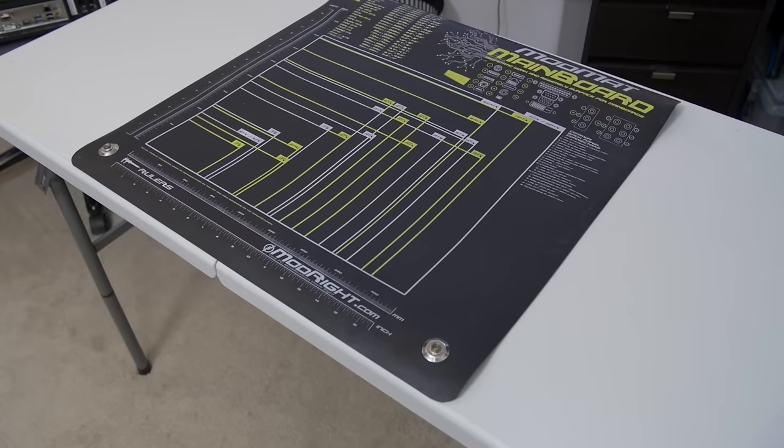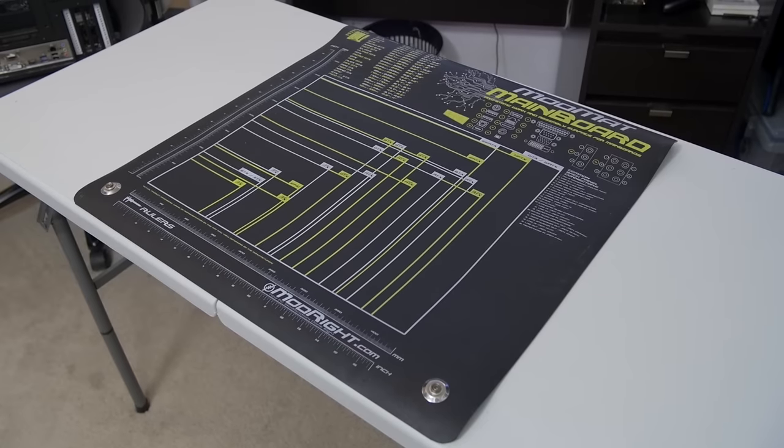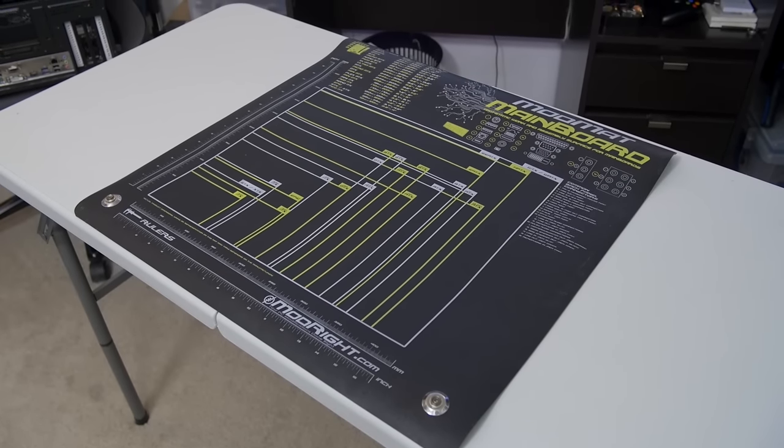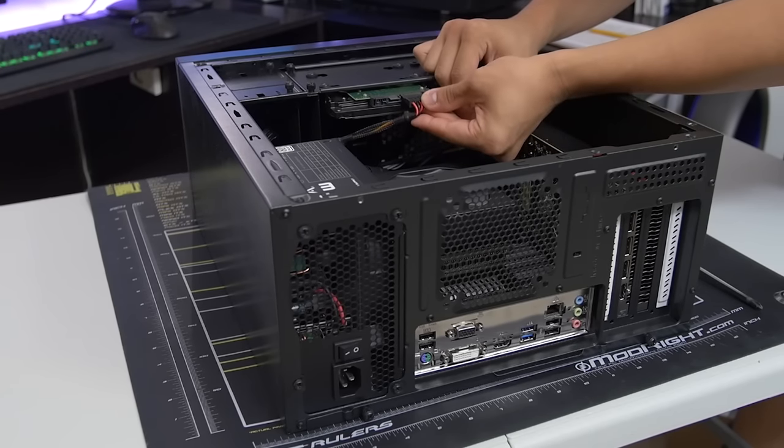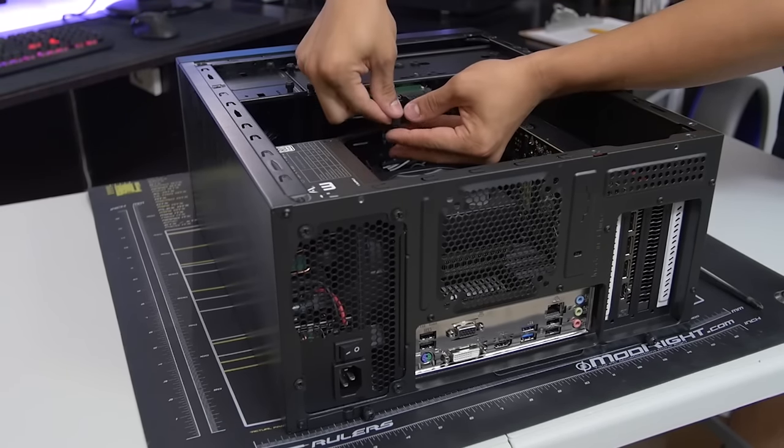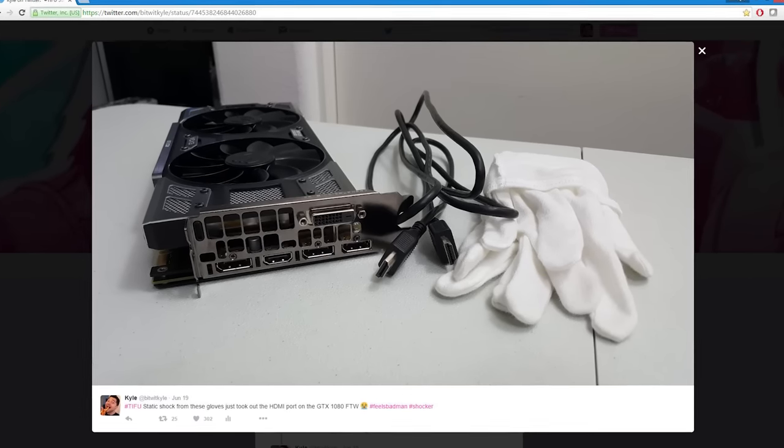Another item that's proven incredibly useful over the years is my ModRite mainboard modmat, which is one of those things I never knew I needed until I had one. The modmat provides a 23 by 23 inch anti-static assembly surface for all of your components just one zap away from never working again. Just ask the HDMI port on my GTX 1080 for the win edition. Oh wait, you can't, because it's dead.